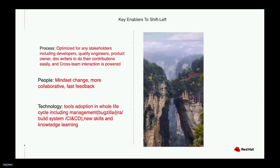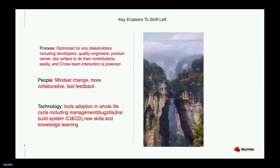I suggest there are several key elements you need to care about, because these elements have a very huge impact on the transition. First is process. Your team process needs to be optimized so that any stakeholders — including developers, quality engineering, PO, or doc writers — can do their contributions easily. Cross-team interaction should be empowered as well. Second, people. Any stakeholders in the team need a changing mindset. They need to work more closely and more collaboratively, and provide fast feedback to each other. The final element is technology. New tools need to be adopted in the whole lifecycle management, and new skills or knowledge also need to be learned.